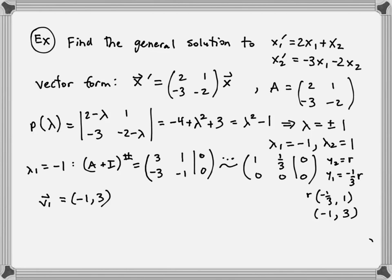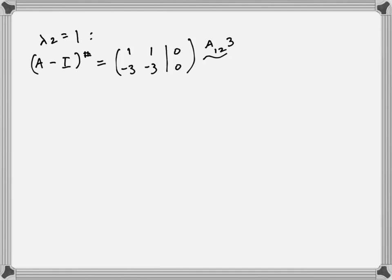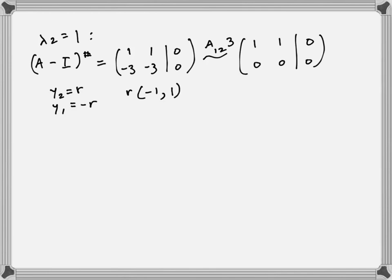For λ2 = 1, solve (A - I)·y = 0. The augmented matrix [[1, 1 | 0],[-3, -3 | 0]] row reduces to [[1, 1 | 0],[0, 0 | 0]]. With free variable y2 = r, we get y1 = -r, giving eigenvector v2 = (-1, 1).